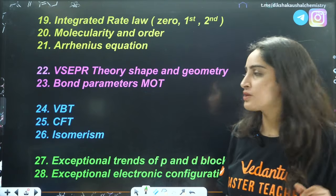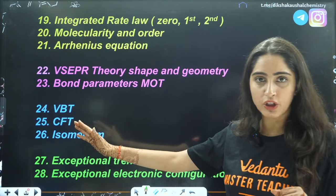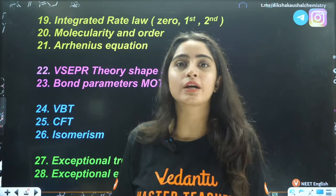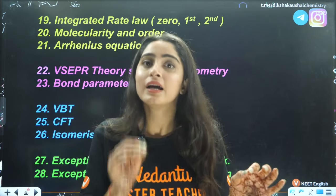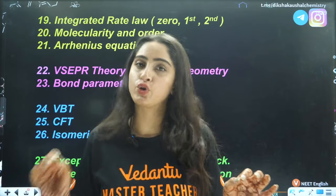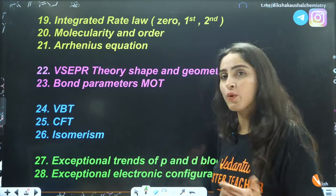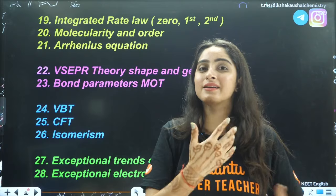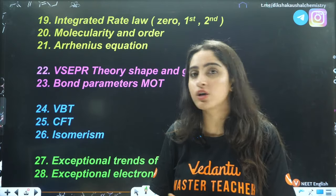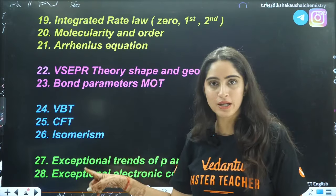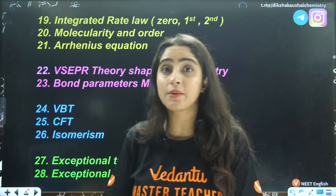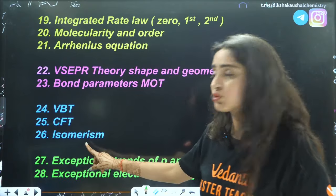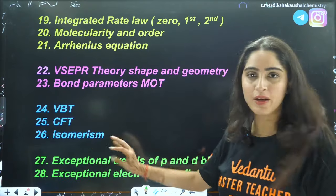Next is coordination chemistry, covering VBT and CFT theories. The examples mentioned in your NCERT as well as exceptions not in NCERT — which I have already covered in lectures — you need to remember for NEET. For boards, focus only on NCERT, but for NEET, those exceptional examples are also important. Next is isomerism — structural and stereo — covered in detail in 3D structures.